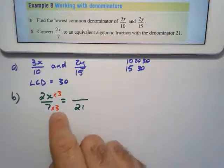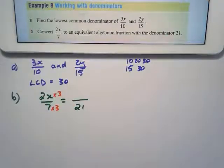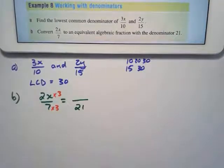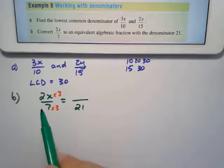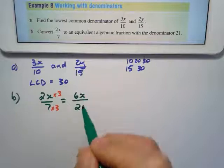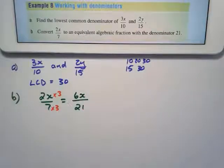I'm going to multiply the denominator, but I also have to multiply the numerator. And remember why? Because now I'm multiplying by 1, and that's why I get an equivalent fraction. 2x times 3 equals 6x, and that will be my equivalent fraction.